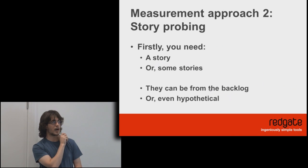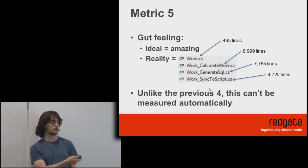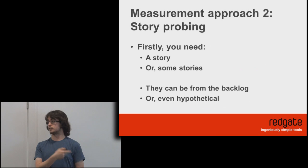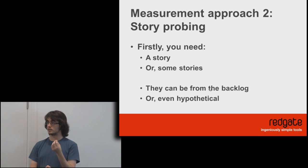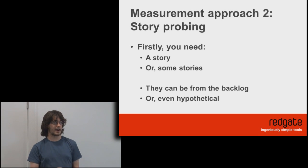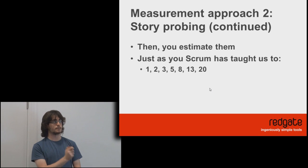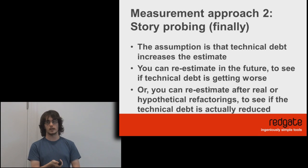This is the approach the presenter on the course recommended. Instead of looking at the entire application and measuring metrics over it, you look at the things you're actually going to have to change. Some of the application just sits there and doesn't need changing, but more interesting are the bits you're going to change and how those affect technical debt. For this approach, you need some stories — either from the backlog or hypothetical — and then you estimate them just as Scrum teams do, giving them points: 1, 2, 3, 5, 8, 13, 20. The assumption is that technical debt increases that estimate, because technical debt makes the code harder to change.